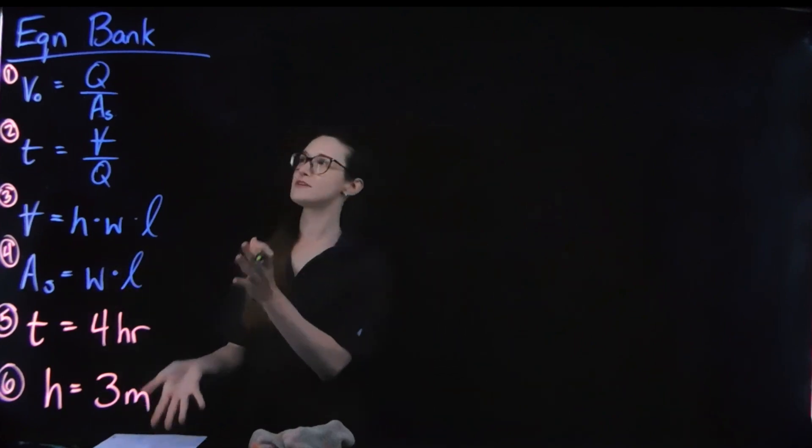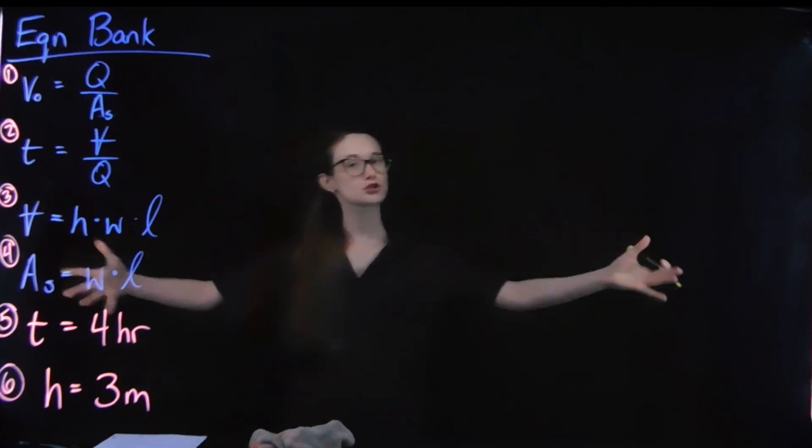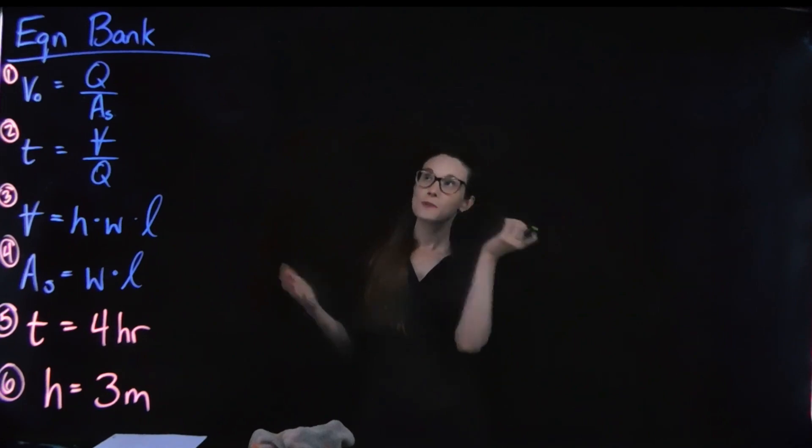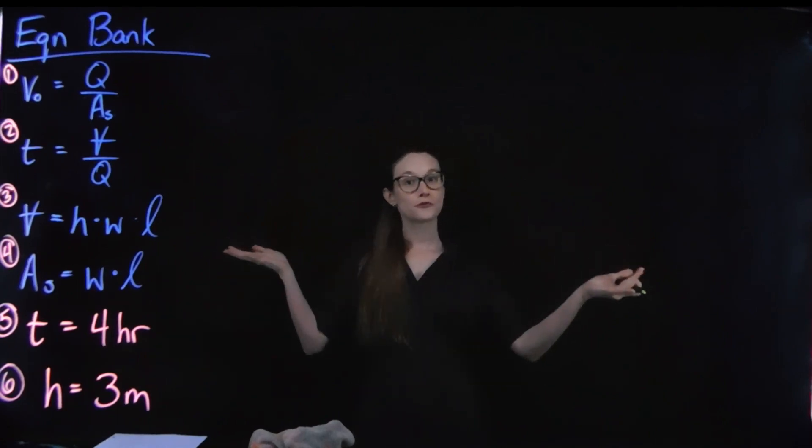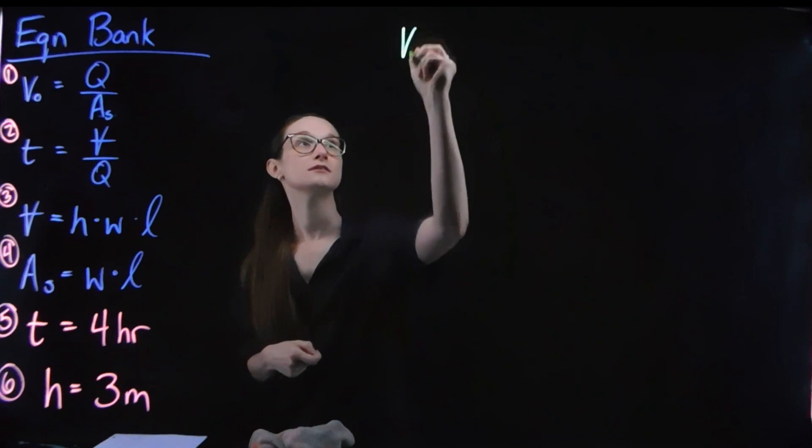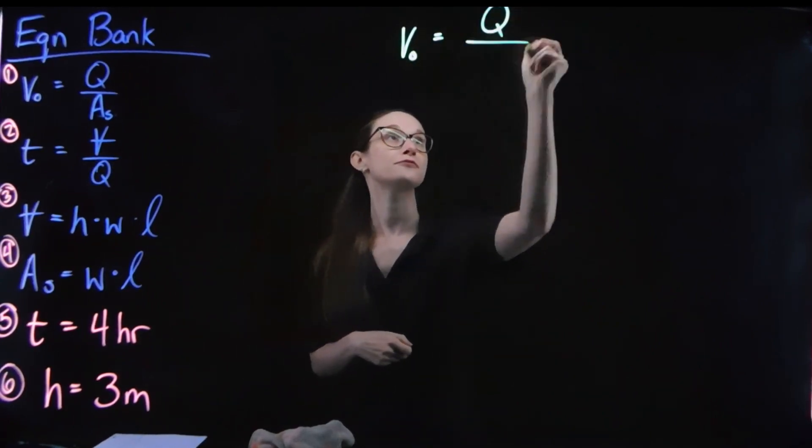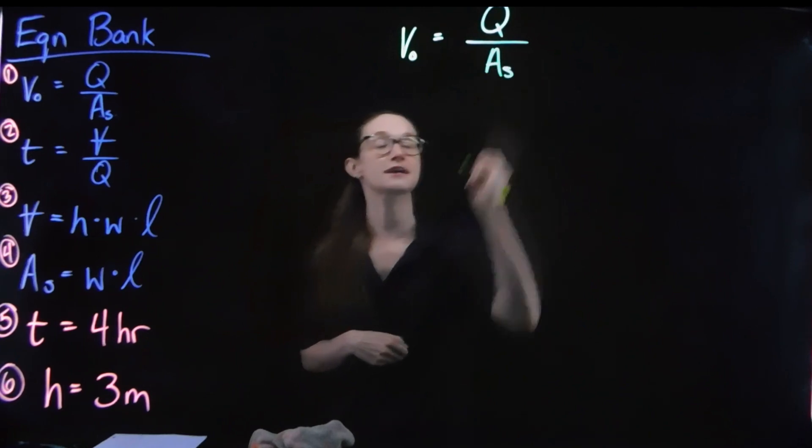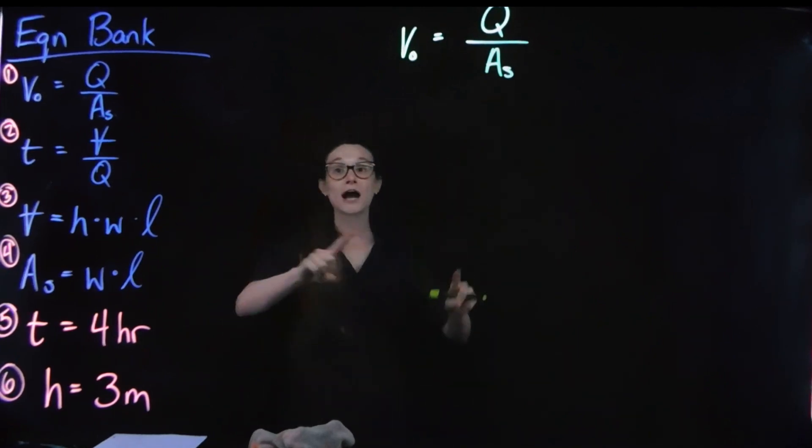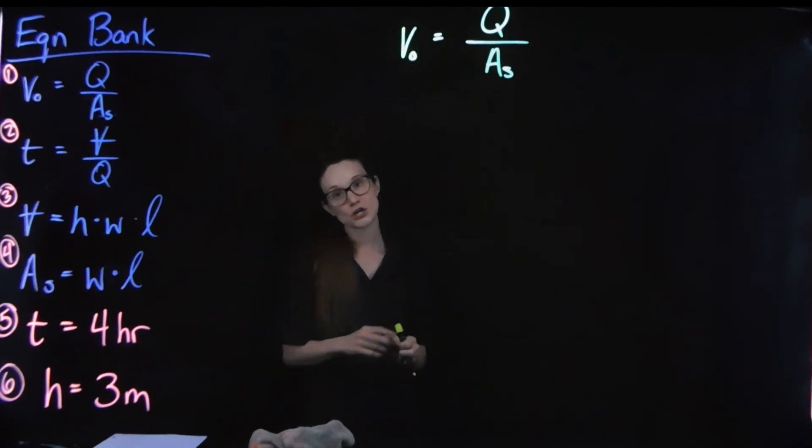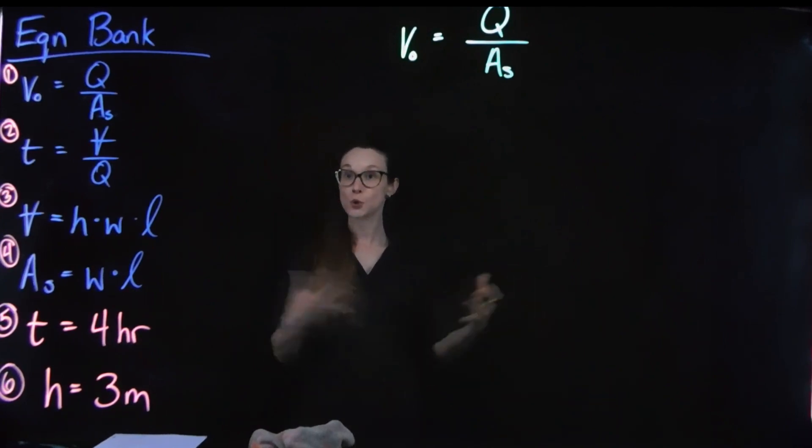So if I didn't have this bank sitting over on the side, and I was just looking into this problem, I would probably go, well, overflow velocity, I know that overflow velocity is calculated by my flow rate divided by my surface area. Now here, I go, hey, I have three unknowns, so I'm going to need at least two more equations, or a total of three equations, in order to potentially solve this problem. That's the whole idea with Kramer's rule.